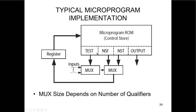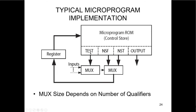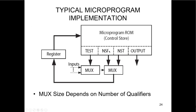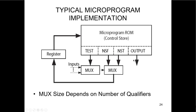Now we have no Mealy outputs and only one qualifier per state: start, m, and k. The test is going to have to be two bits, requiring a 4-to-1 mux, because we have to pick among start, m, k, and a default. Since we have six states, our state encoding needs to be three bits. So we need three bits for next-state-false, three bits for next-state-true, two bits for test, and then the outputs: load, add, shift, and done — that's four output bits. The mux size depends on the number of qualifiers.